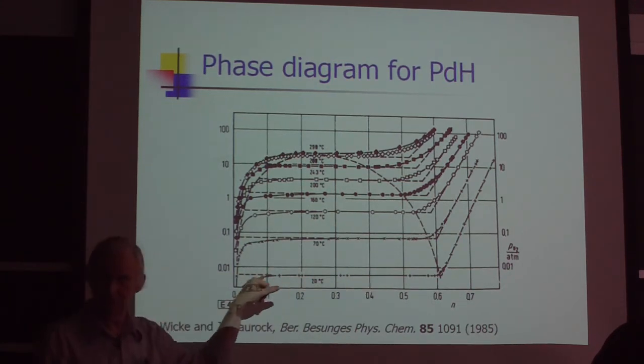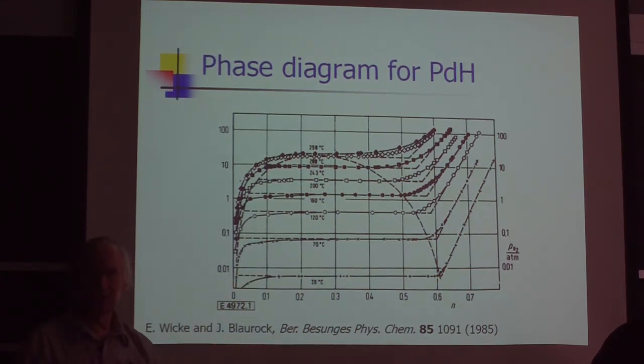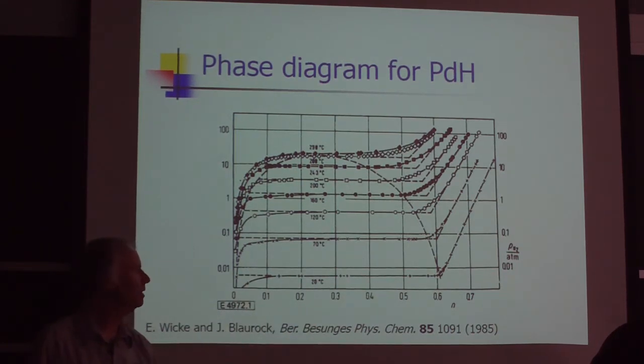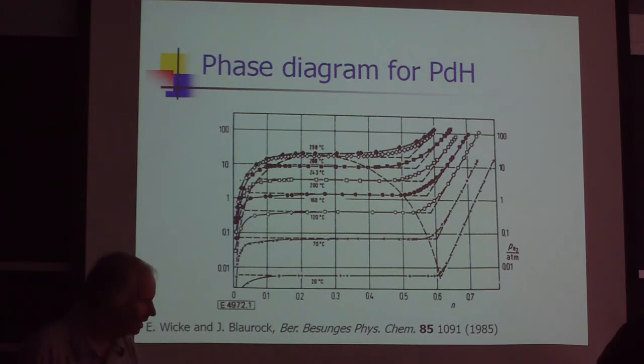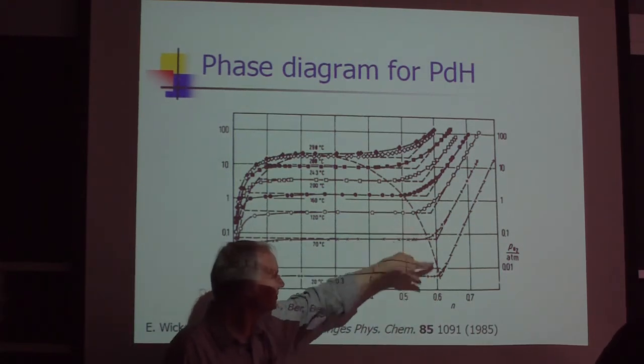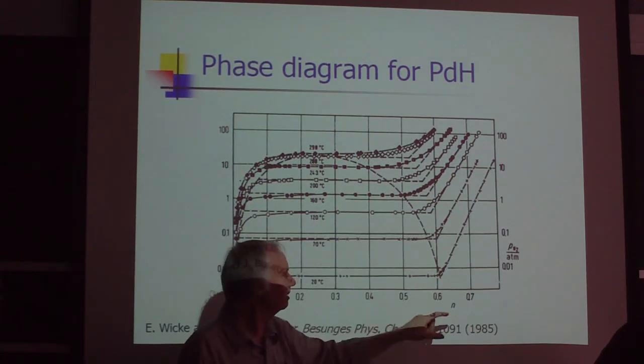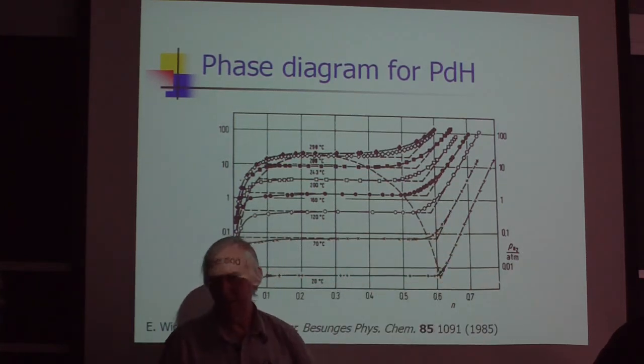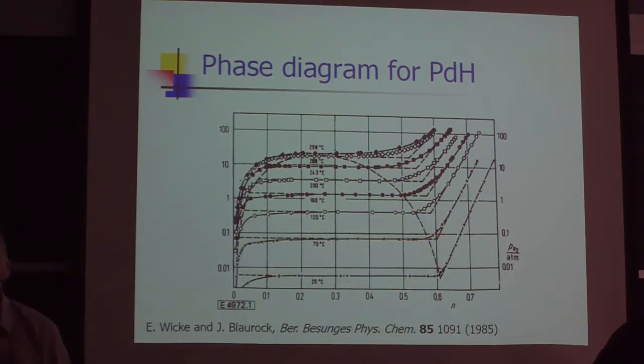What you find is that as you increase the pressure, with very small change in pressure, there's a very large change in the miscibility gap region in the amount of hydrogen that goes into the palladium. And then once you get above the phase boundary here, then you have to raise the pressure a lot to get increasing amounts of hydrogen into the palladium.